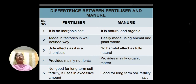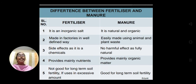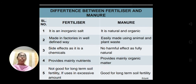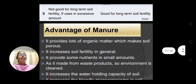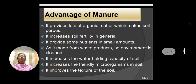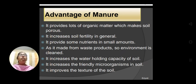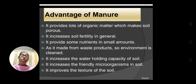These are some of the differences between fertilizers and manures. By now you may understand why manure should be preferred. Obviously, it is manure. Let us discuss the advantages of manure. Manure is rich in organic matter, so when added to the soil, it makes the soil porous and increases the soil fertility in general.